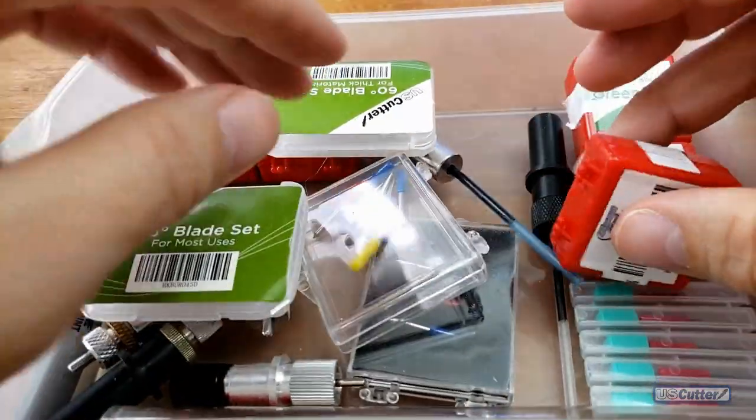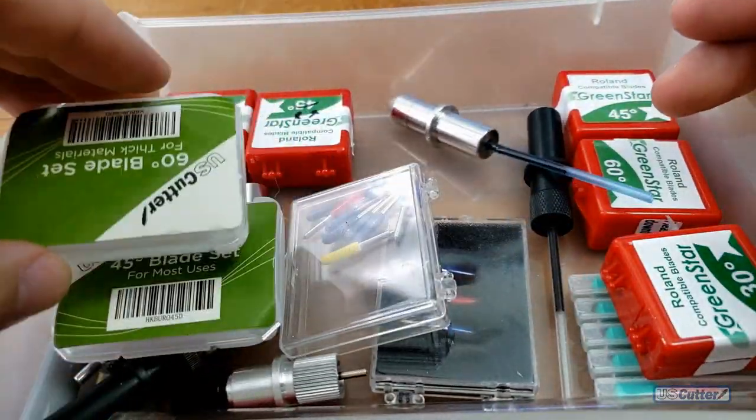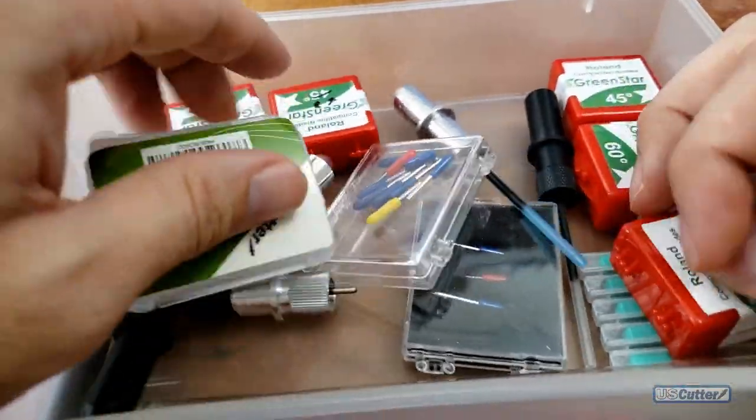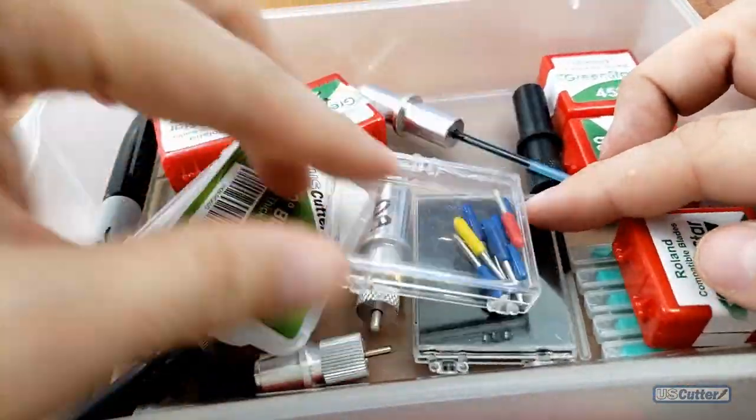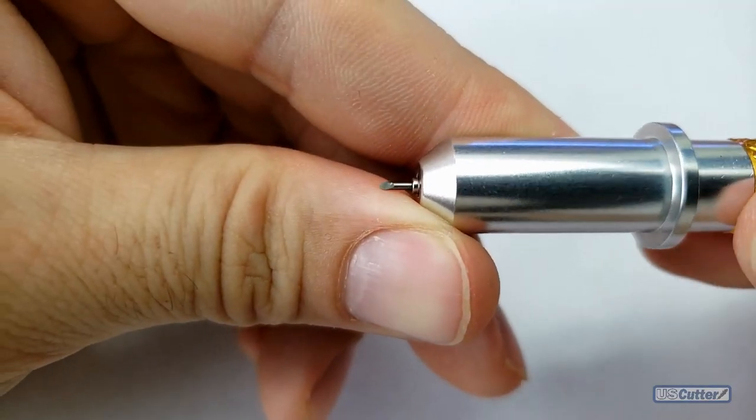All US Cutter cutters like the MH, SC2, Laser Point 3, Titan 1, 2, and 3, and Prism Cut use Roland compatible blades and the blade holders are all going to look and work similarly.